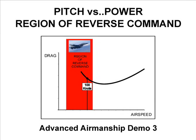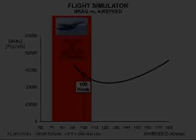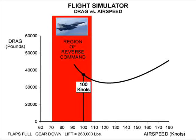This is Demonstration Number 3 from the Aviation Textbook, Advanced Airmanship, Book 1, Precision Flying. This demonstration examines pitch and power control in the region of reverse command, which is the normal operating region for jet fighters during carrier approaches.